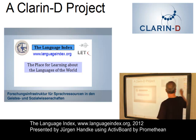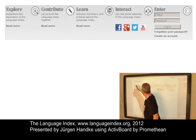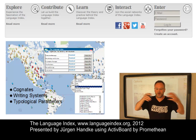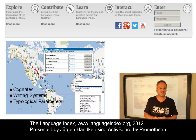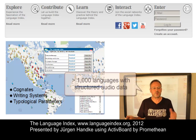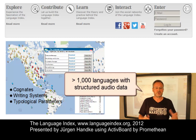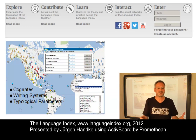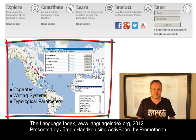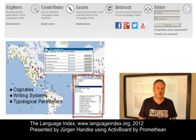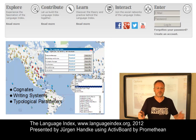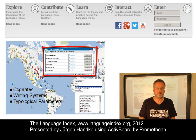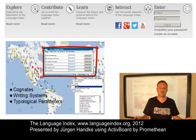And here is what you can do with the Language Index. Via the hyperlink Explore, you can explore all samples that are part of the Language Index database. Currently, the Language Index hosts more than a thousand languages with structured audio data, meaning the same dataset has been recorded cross-linguistically. You can access our speakers via an interactive map, or via a pull-down menu, or via linguistic parameters such as word order, particular vocalic features, and so on. All audio files can be downloaded in MP3 format and used for further linguistic research.